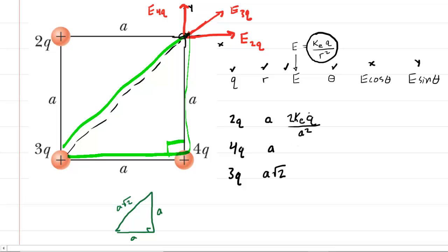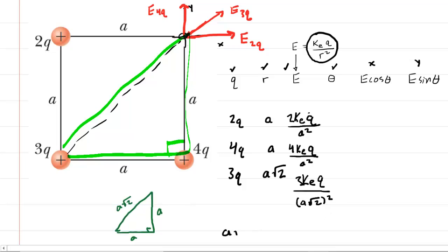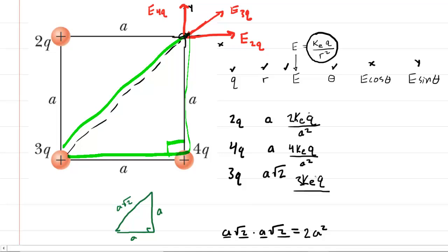For the third electric field from 3Q: E = kE × 3Q divided by the distance squared. The distance is A√2, so we square that: A√2 squared equals A√2 × A√2. A × A is A², and √2 × √2 is √4 = 2, so it ends up being 2A². We can therefore simplify the denominator to 2A², giving E3Q = 3kEQ / 2A².